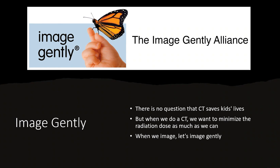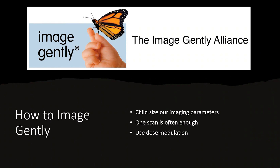So when we image, the concept behind Image Gently is to make sure we're limiting that dose as much as possible. We want to make sure we child-size our imaging parameters. We want to limit the number of scans that we do, so hopefully one scan is enough. And then we want to modulate or limit the dose depending on the area of the child that we are imaging.